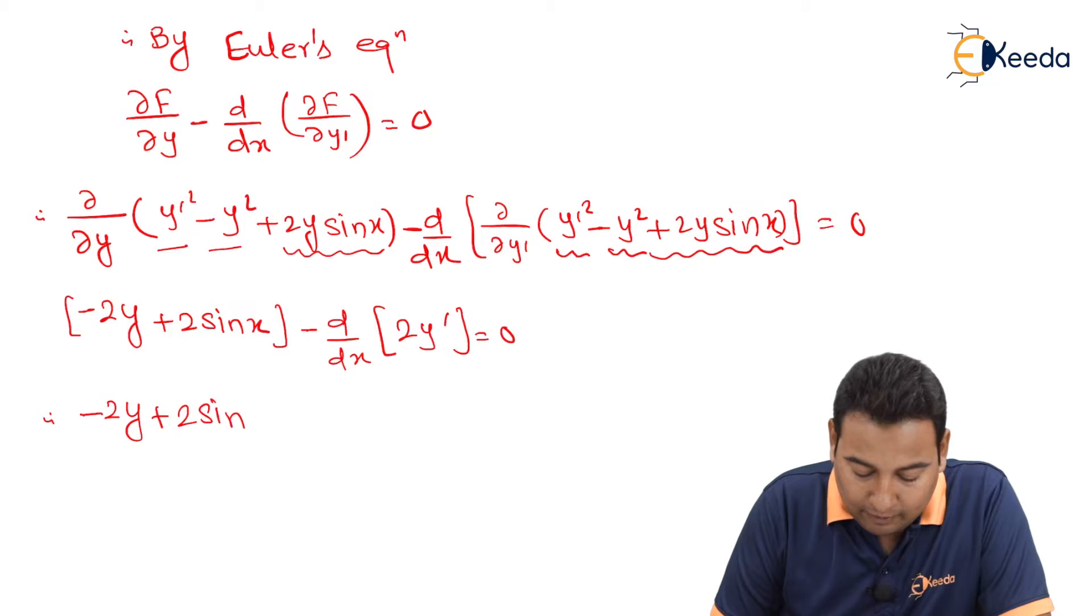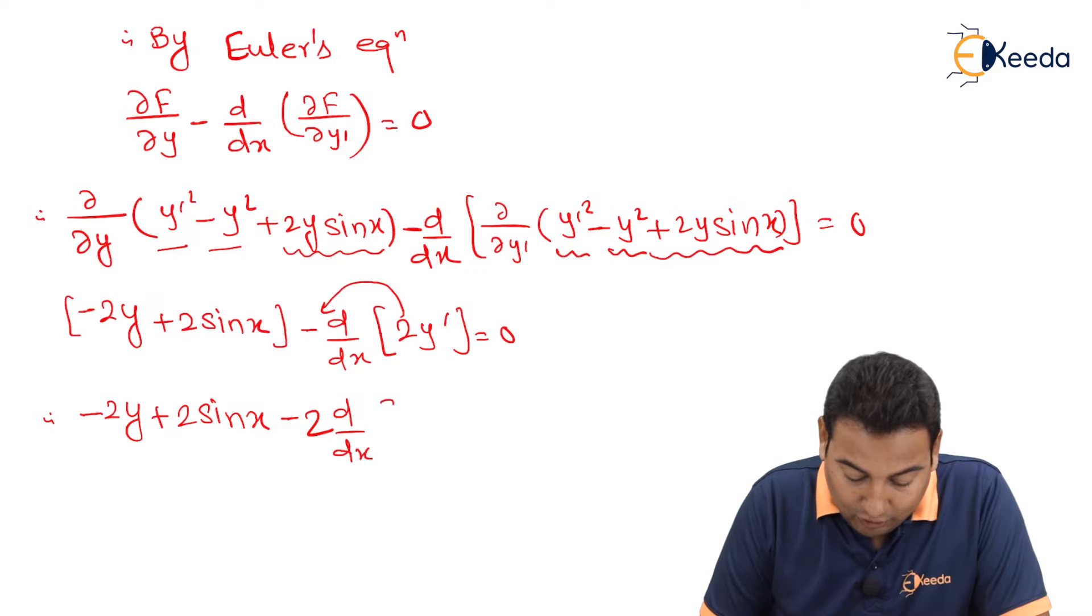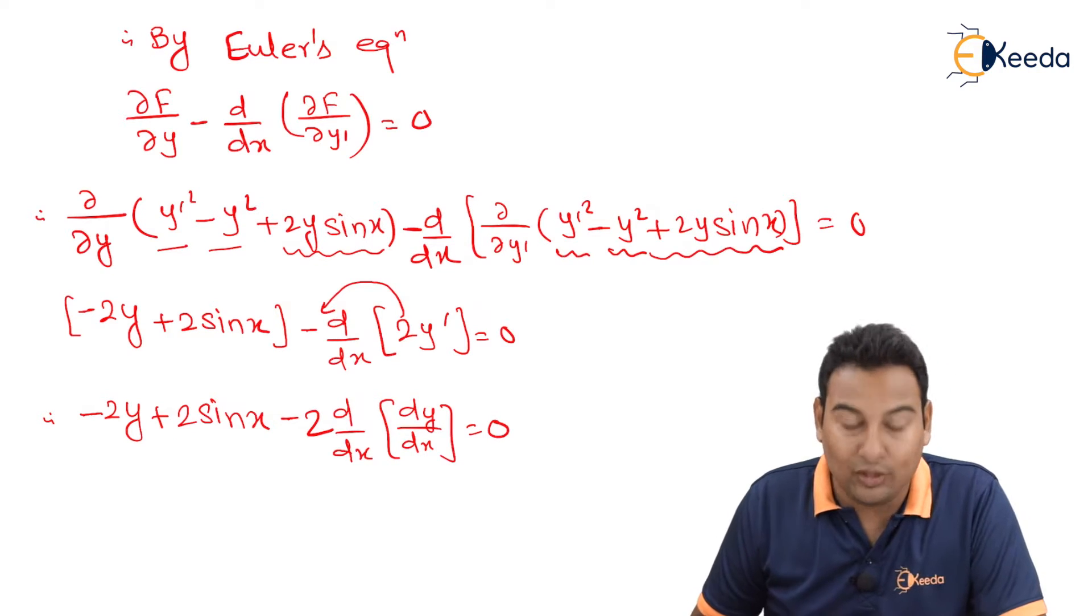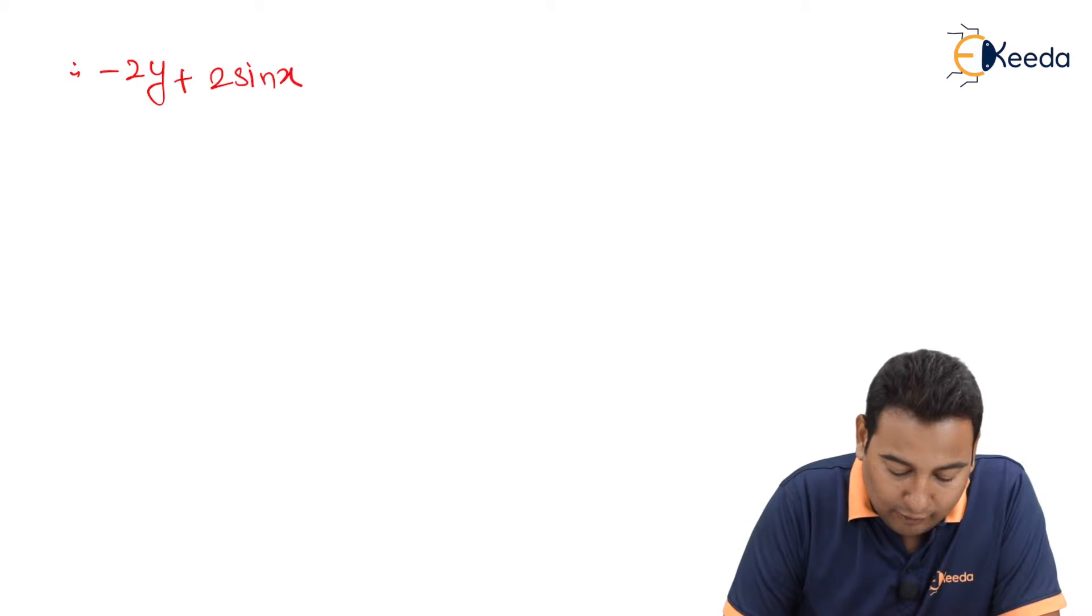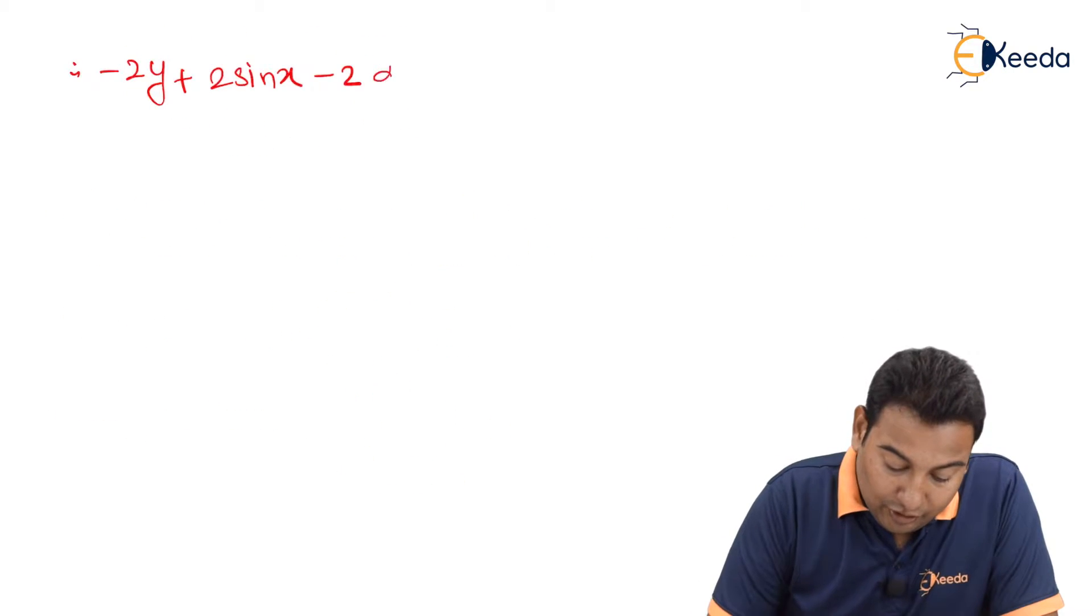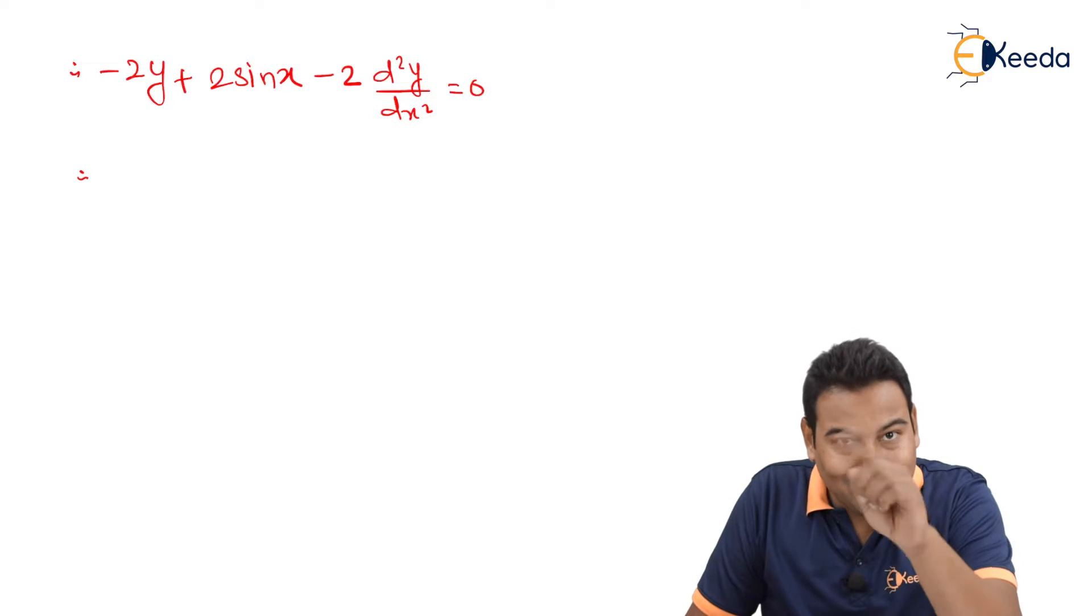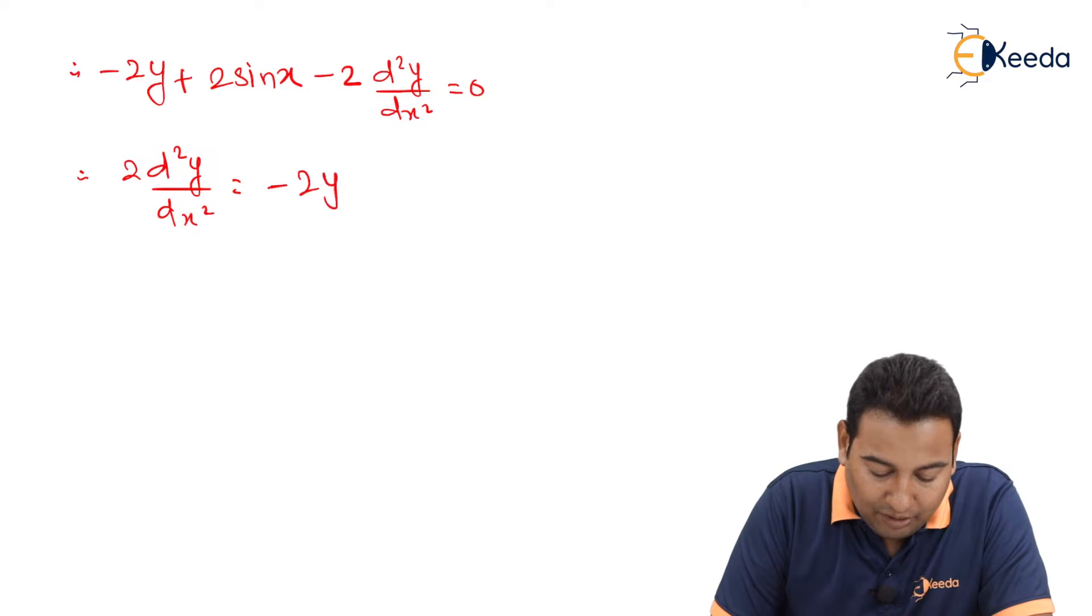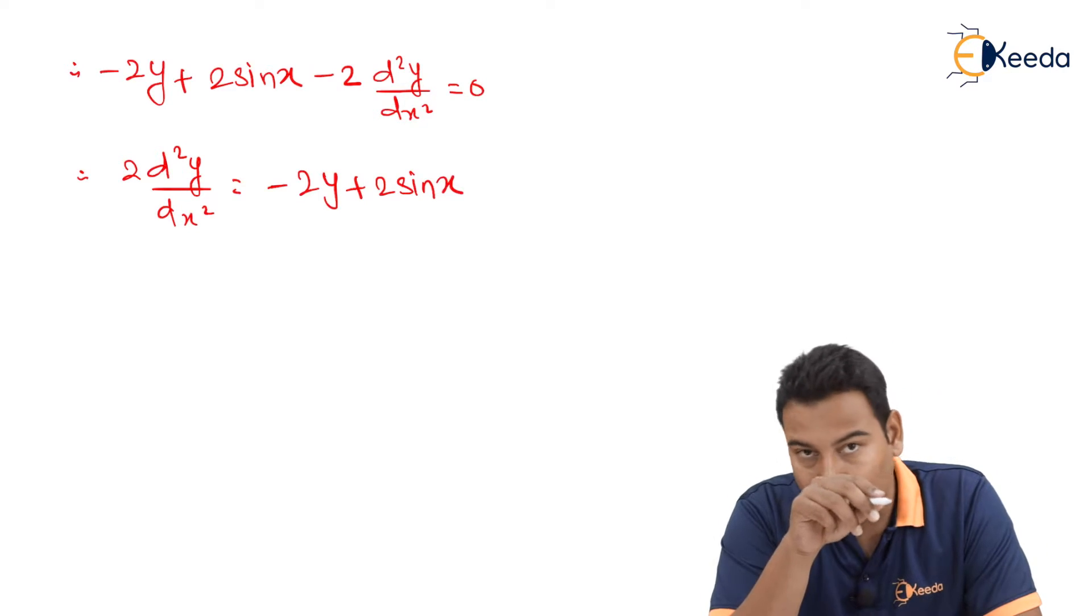Therefore, minus 2y plus 2 sin x minus 2. This 2 is a constant, will come out. d/dx of, inside we do have y dash. And what is y dash? dy/dx equal to 0. If you multiply inside, this is minus 2y plus 2 sin x minus 2. This term will become double derivative. That is, d²y/dx² equal to 0. Minus 2 d²y/dx². Let's take that side. Therefore, that will become plus.